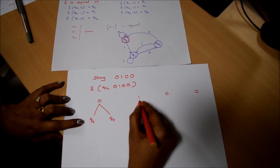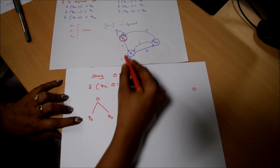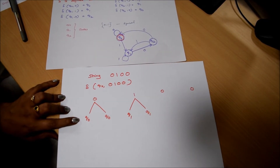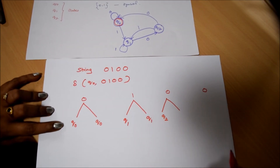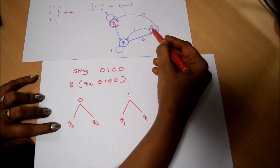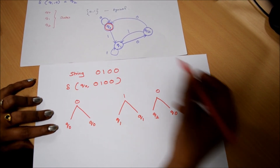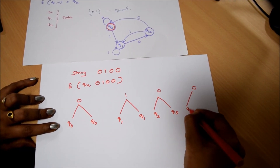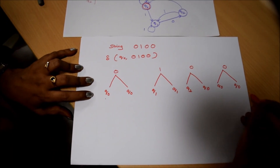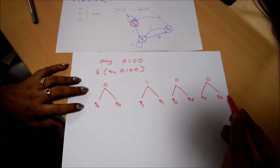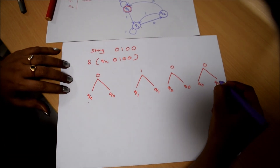Q0 with 1 goes to Q1. Q1 with 1 stays at Q1. Q1 with 0 goes to Q2. Q2 with 0 goes to Q0. So the final state reached is Q0, which is the final state. This string 0100 is accepted by this DFA because the transition ends with the final state.